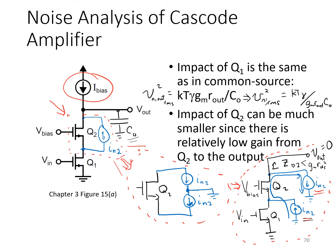Hence, as a result, the main takeaway point here is that the noise performance of the cascode stage is still generally dominated by the transistor Q1.